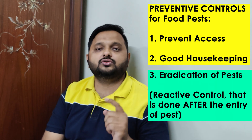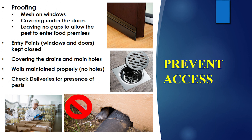The first control is to prevent access. In order to prevent access, we need to do proofing — such as meshes on windows, coverings under doors, and leaving no gaps to allow pests to enter. All windows and doors must be kept closed and in good repair. Corners should not be broken so that pests cannot enter. All main holes in the walls should be maintained effectively and covered with mesh so that cockroaches or anything else cannot enter through them.